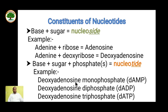For example, if a single phosphate is added, it becomes deoxyadenosine monophosphate. If two phosphate groups are added, it is deoxyadenosine diphosphate. And if three phosphate groups are added, it is deoxyadenosine triphosphate.